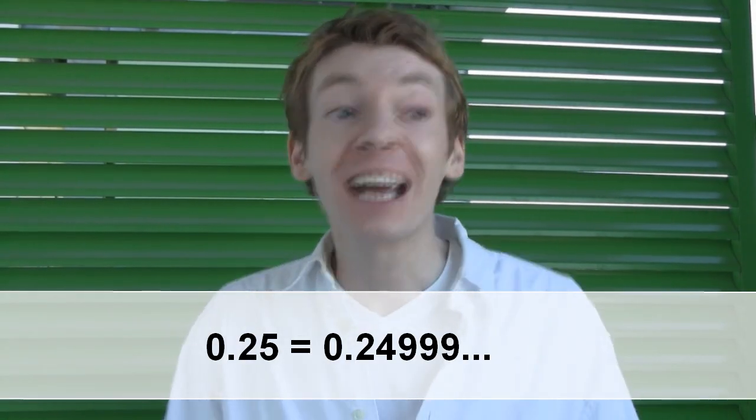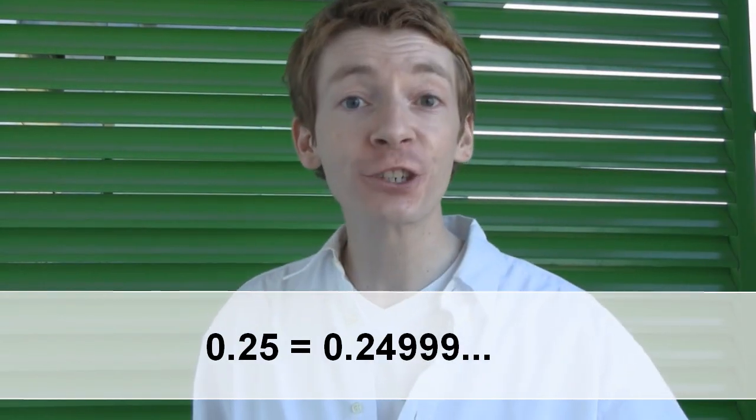In the same way, 0.24999 recurring is just another way to write 0.25. It's just notation, and our notation isn't unique. So sometimes there's a long version to write a number, and sometimes there's a short version to write the number.